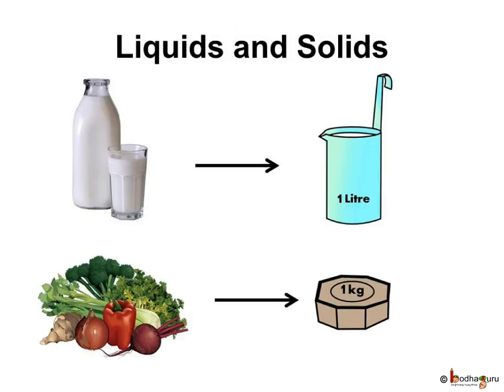We can measure solids and liquids but the methods are different. When we buy milk, it is measured in liters. It means we buy it by measuring how much space it occupies. The amount of space occupied by an object is called its volume.